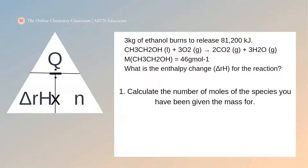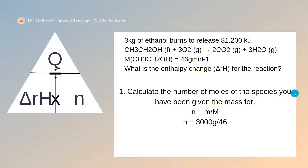So the first step is to work out the number of moles of ethanol. As we are only given the mass and the molar mass, we need to use the equation: number of moles equals mass over molar mass. In this equation the mass needs to be in grams, because the unit for molar mass is grams per mole. So we need to convert three kilograms into grams — three times a thousand is three thousand grams. We then divide by the molar mass, which is 46, giving us 65.217 moles of ethanol burnt.